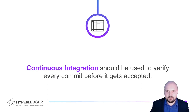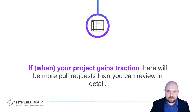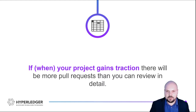As of right now, GitHub Actions has free resources provided to open source projects, which is great. You should always have automated checks on top of the continuous integration. These checks, together with CI passing, should give you confidence that the code works at least for the simple cases. Once your project gains traction there will be more pull requests than you can review in detail, so it's very important to have as much automation as possible — otherwise you'll end up overworking yourself and burning out, which is not good for anyone.